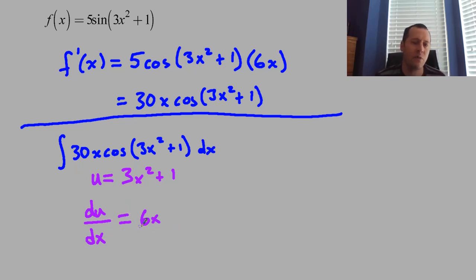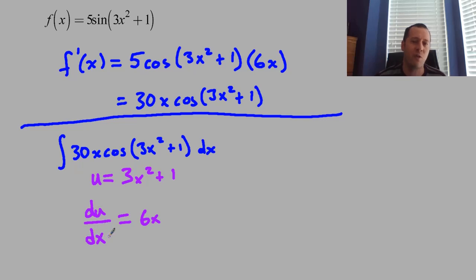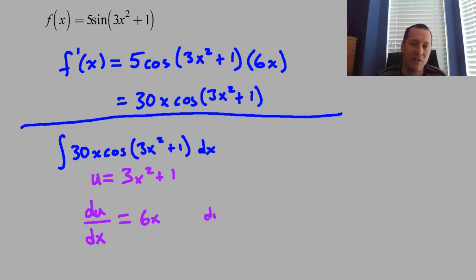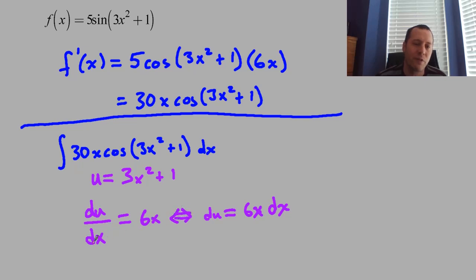What we're going to do when using this technique is write u equals whatever substitution we're doing, then go straight to du in terms of dx. It looks like we're multiplying both sides by dx, and technically du and dx are both differentials—they're infinitesimal, approaching zero. But the result is equivalent, so we can say du equals 6x dx. In practice, we just take the derivative of the inner expression and multiply by dx at the end.